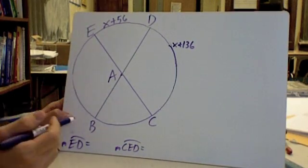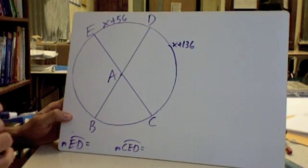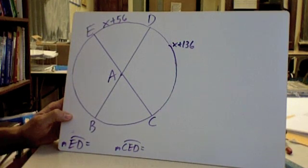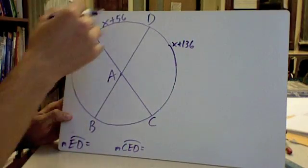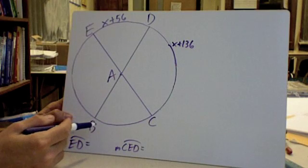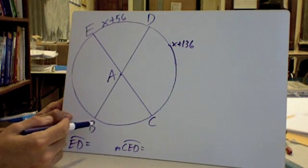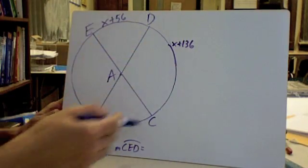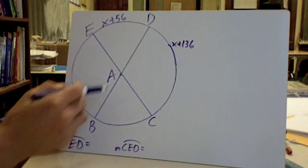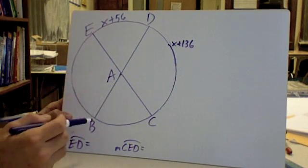So for circle A, we need to figure out what X is. To do this, there's two facts we need to be aware of. Every circle, if you go all the way around it, starting at B and going back to B, has 360 degrees in it. If I add up all of the arc measures going all the way around, I'll get 360. Or if I add up all of the central angle measures, I'll get 360.